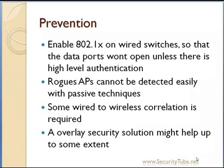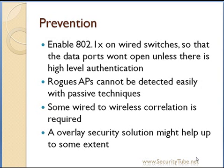Another question everyone has is how to detect the existence of a rogue access point. A rogue access point is transmitting beacons in its surroundings, so if you know the MAC addresses of all authorized access points, the rogue access points are those other than the authorized ones. It may be a little tricky to distinguish between neighbor access points and rogue access points, so there has to be some correlation between wired and wireless traffic. To do an accurate job you might have to deploy an overlay security solution to surely identify which is authorized, which is external, and which is rogue. But to simply prevent rogue access points, enabling 802.1x on your wired switches is a pretty good solution.